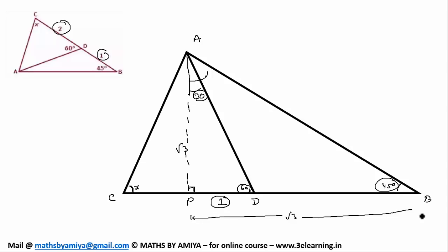PD is 1. PB is root 3. This one is root 3 minus 1. So I draw all my construction on the basis of the ratio.